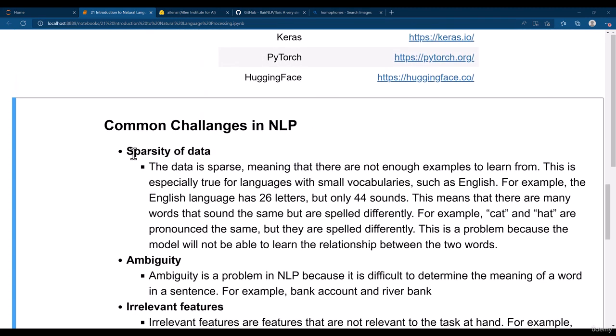In case of sparsity of the data, in English language especially, we have 26 letters and out of those 26 letters, we get just 44 sounds. That means there are many words which sound the same but their meanings are different.